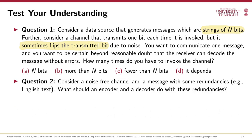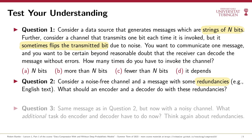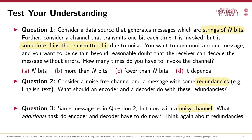The second question reads: assume you have a noise-free channel and a message that contains some redundancies, like English text that follows certain orthography and grammar. What should the encoder and decoder do with these redundancies if our goal is efficient communication — using the channel as little as possible? Finally, question three builds on question two and reintroduces channel noise. Now let's assume the channel introduces noise — maybe an occasional random bit flip. What additional tasks do encoder and decoder have to do? In particular, think again about redundancies. Pause the video now and think about your answer, then I'll tell you what I would have answered.